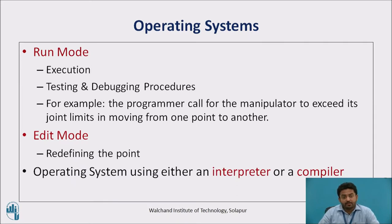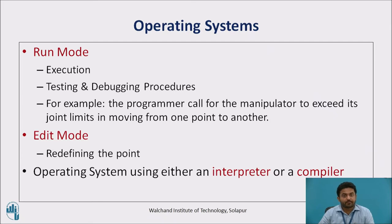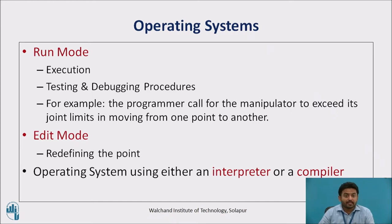Run Mode is used for executing a robot program. When testing a new program in Run Mode, the user can typically employ debugging procedures built into the language to help in developing a correct program. For example, if the programmer calls for the manipulator to exceed its joint limits in moving from one point to another, an error message would print out on the monitor and the robot would stop. This condition can be corrected by returning to Edit Mode and adjusting the program or by redefining the point. The Edit Mode provides an instruction set that allows the user to write new programs or to edit existing programs.